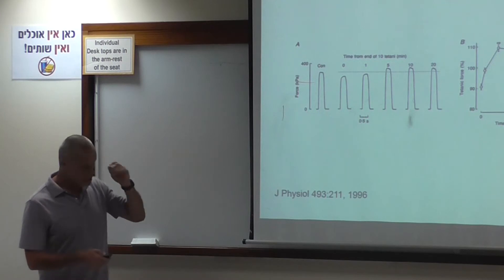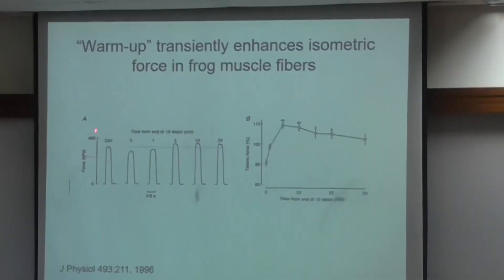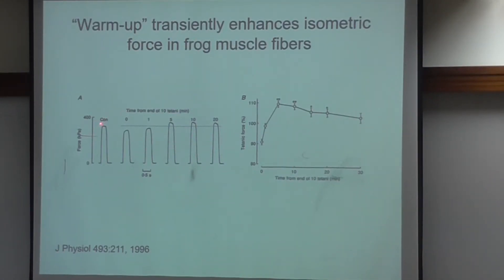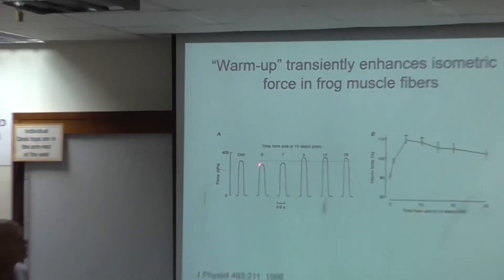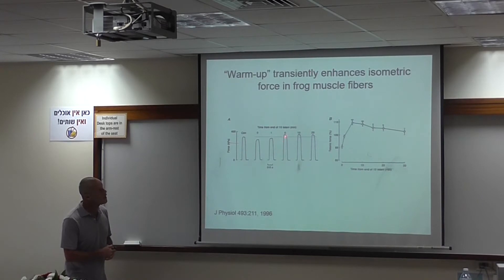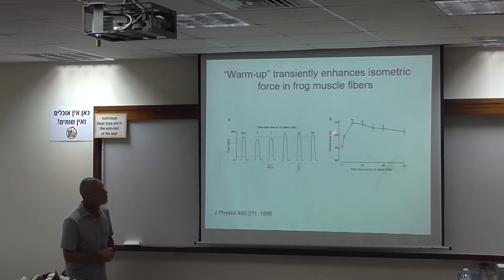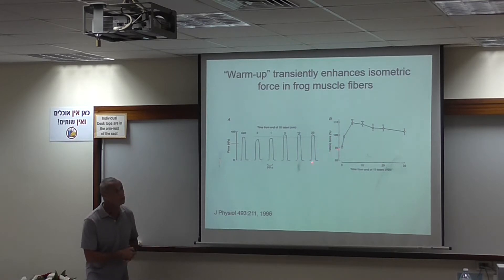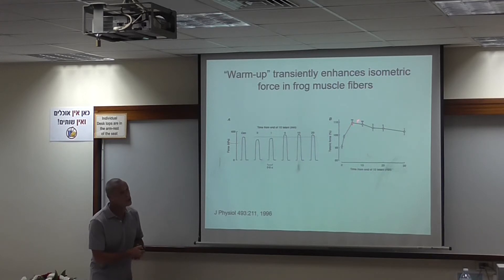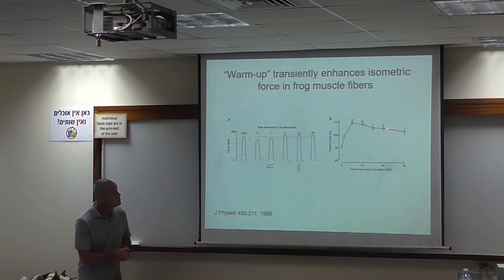This is a study done by Joe Bruton on single intact frog muscle fibers. Here we have representative traces for a control muscle — force in the first contraction — and after 10 contractions, force decreases to about 90%. If we follow force during recovery, we see that at 5 minutes post-contraction, the force is actually potentiated. He called this a warm-up effect. Looking at the mean values of force over time from the end of 10 tetani: at time zero, after 10 contractions, force was down to 90%. During recovery it increased, and by 5 minutes post it was potentiated by about 10%, thereafter continuing to decline.